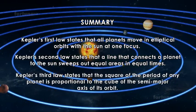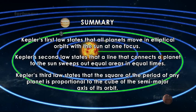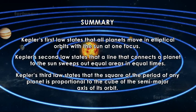Kepler's third law states that the square of the period of any planet is proportional to the cube of the semi-major axis of its orbit.